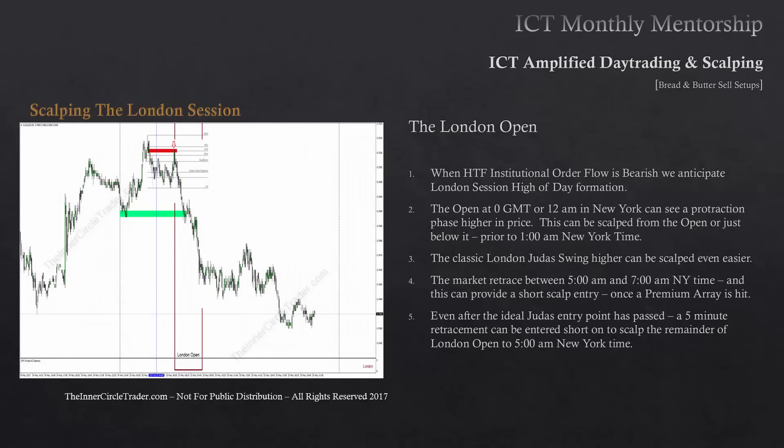Here's an example of scalping the London session. This is a redistribution — price trades up to a fair value level, a fair value gap or bearish order block of that nature. Price comes down to an old low and you can see the offset positions there, all inside of the London open kill zone.